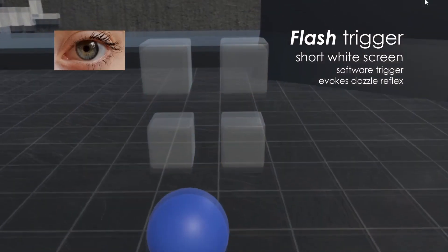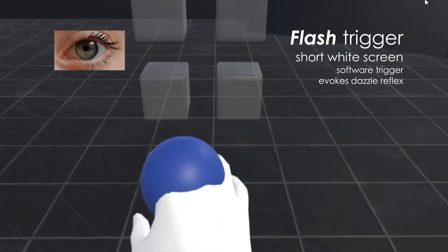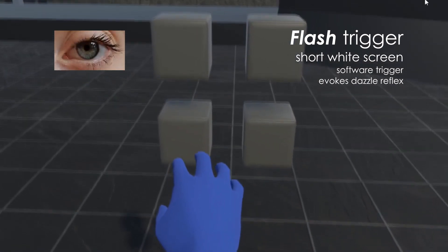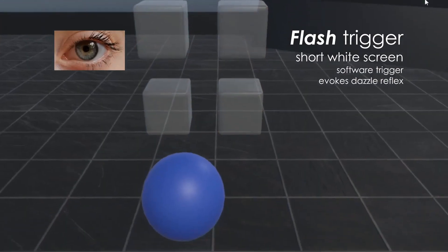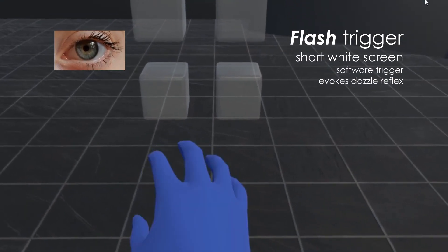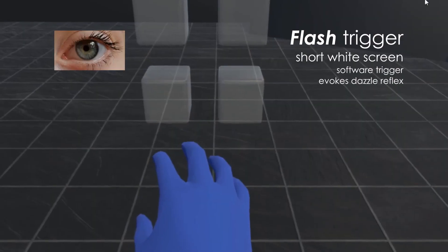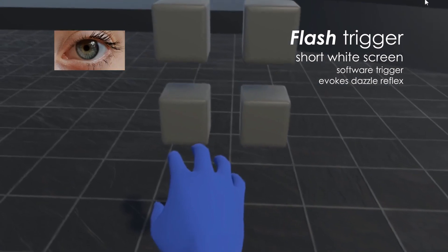Firstly, we investigated a software-based flash trigger that targets the Dazzle Reflex. This reflex makes us blink when a bright light shines into our eyes. To take advantage of the Dazzle Reflex, the flash method renders a white frame inside the HMD when the trigger is activated to maximize retinal illumination for a short time, simulating a bright light.